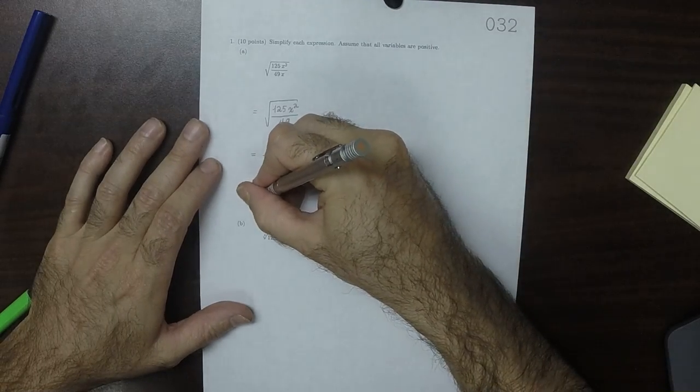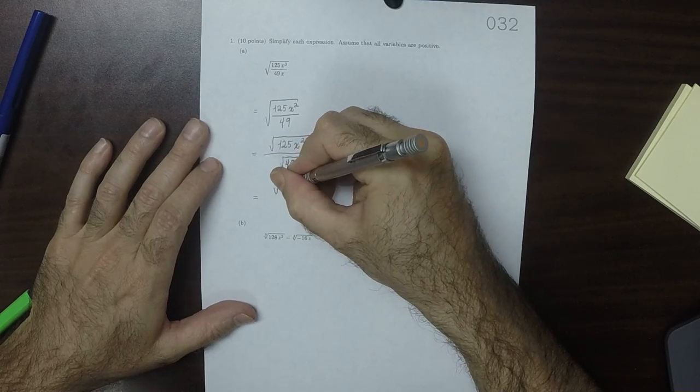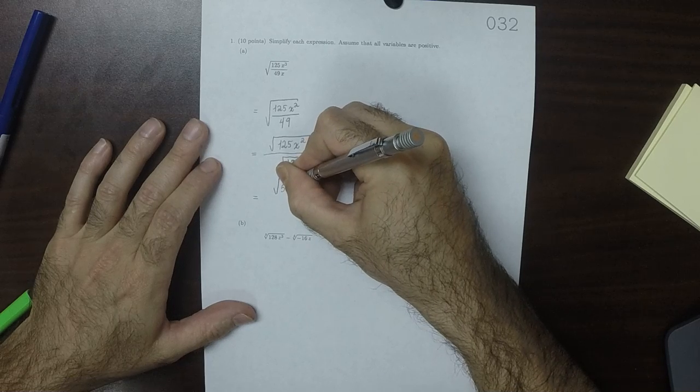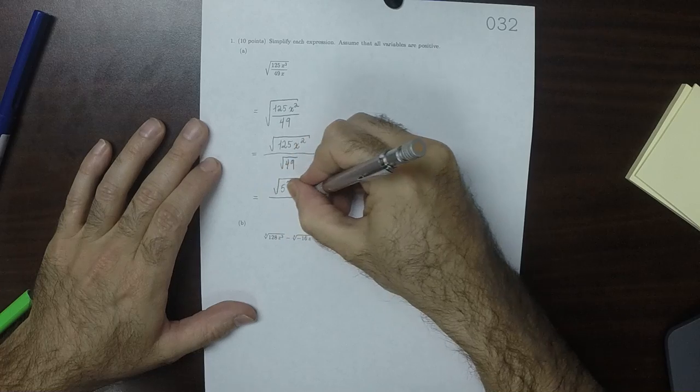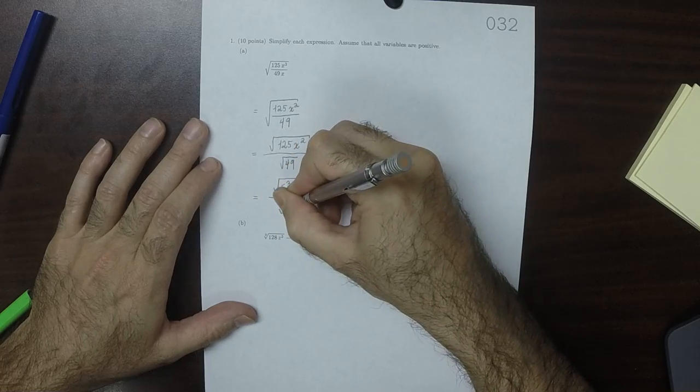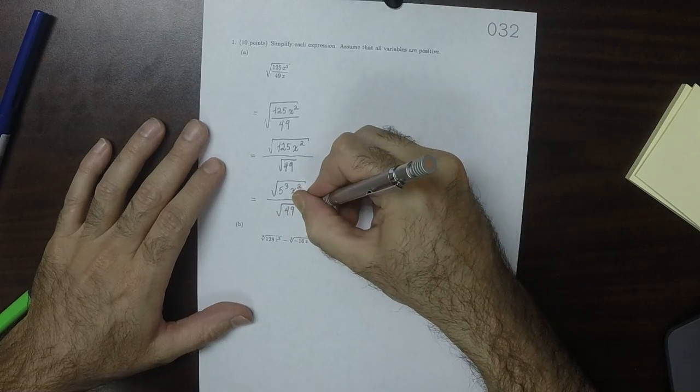Then I'll factor the numerator into 5 cubed x squared over square root 49. I'll leave it as 49, everybody knows that one.